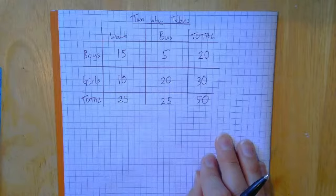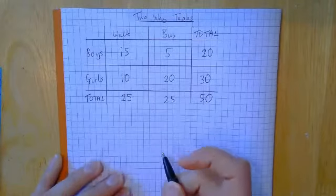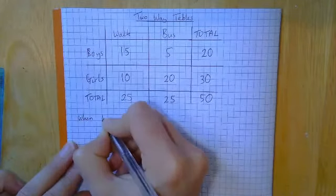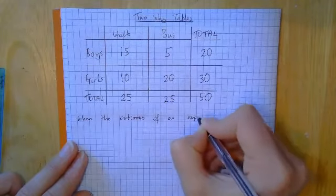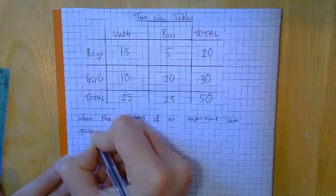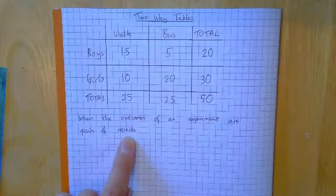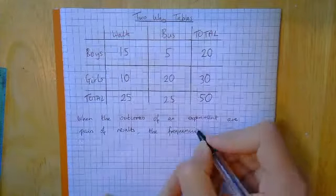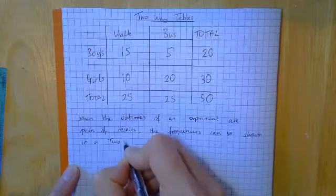Okay, I don't know whether you want to write any notes. I think we'll just write one note about kind of what a two-way table is, but I'm not really sure there's that much more that needs to be said. I think perhaps if you just have a go, that might be the best thing. So let's write that: when the outcome or the outcomes of an experiment are pairs of results, like boy walk or girl bus, so when the outcomes of an experiment are pairs of results, the frequencies, that's a nice maths word, just means how many, the frequencies can be shown in a two-way table.